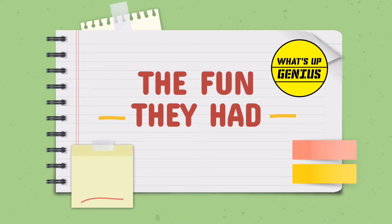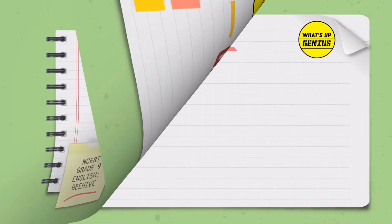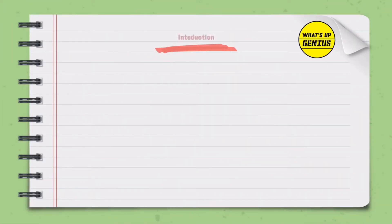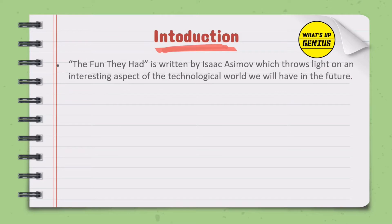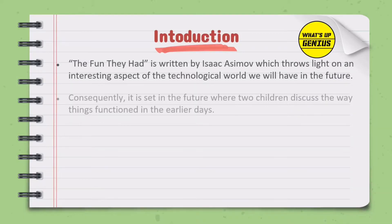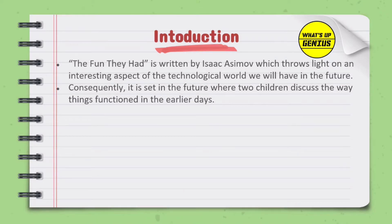The Fun They Had is an NCERT Grade 9 English Beehive chapter, presented by Yashvi Goyal. Written by Isaac Asimov, it sheds light on an interesting aspect of the technological world we may have in the future. It is set in the future where two children discuss the way things functioned in earlier days.